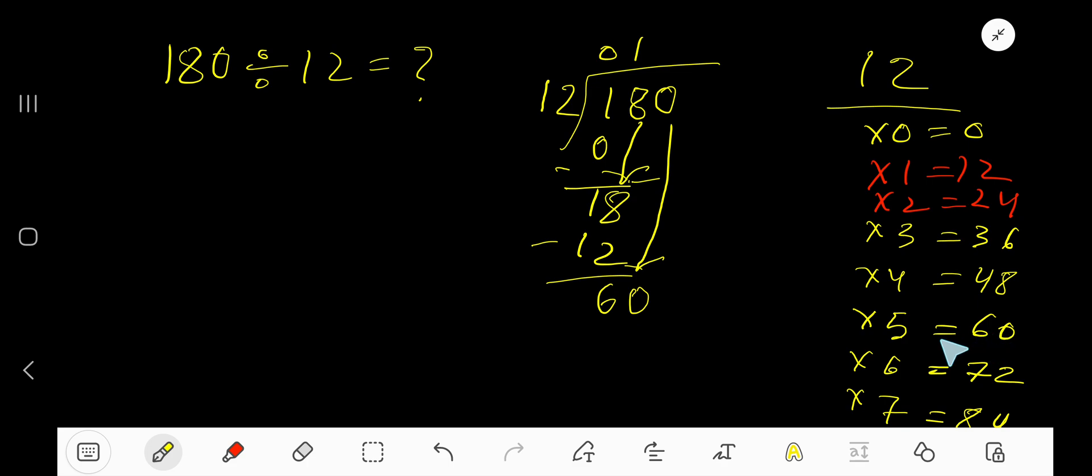12 goes into 60 5 times. Write 5. So 5 times 12 is 60. Let me check. 5 times 2 is 10. Write 0, carry 1 to the next column. 5 times 1 is 5 plus 1 is 6. That is 60. Subtract. 0. So 15 is our answer.